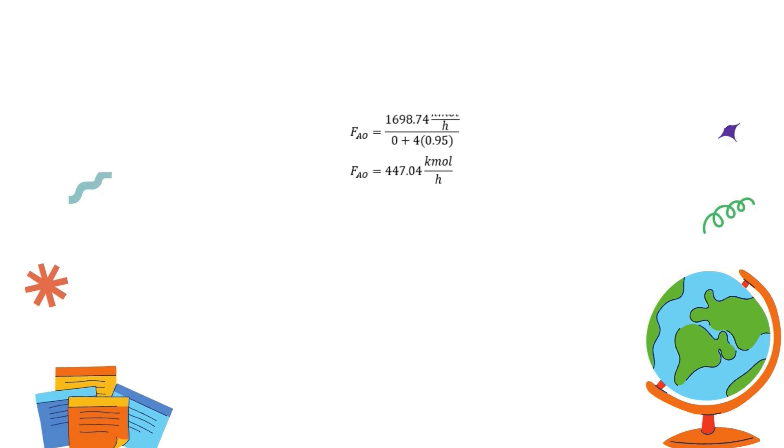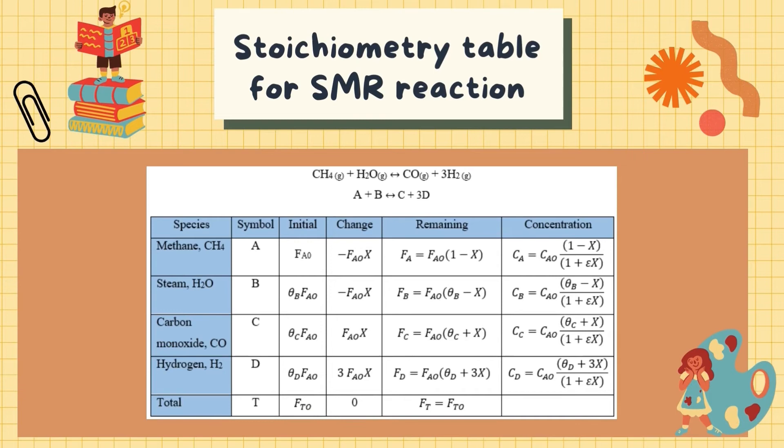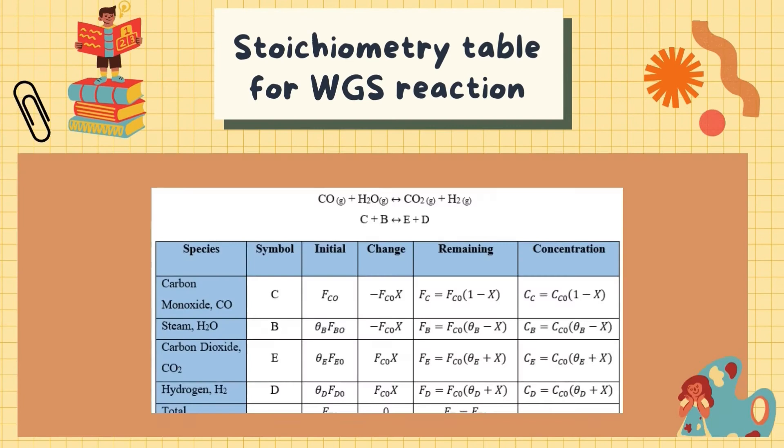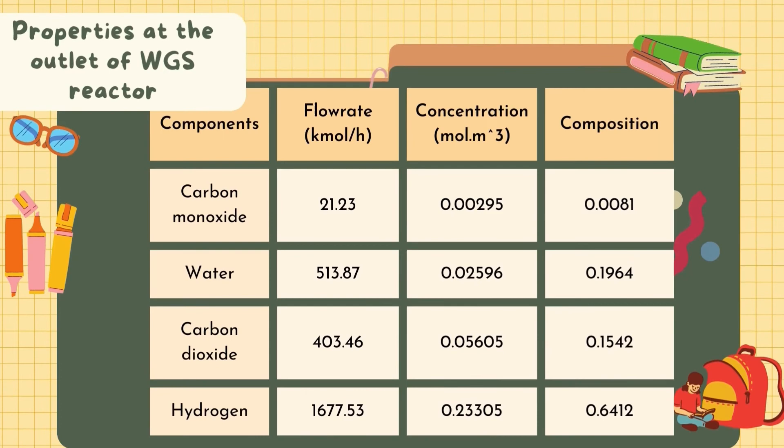Moving on, the stoichiometric table for SMR reaction is constructed as shown in this slide. By utilizing the stoichiometric table, the properties for each component such as flow rate, concentration, and composition can be calculated. Same goes to WGS reaction, the stoichiometric table is constructed. The properties of each component in the reactor then can be determined as shown.